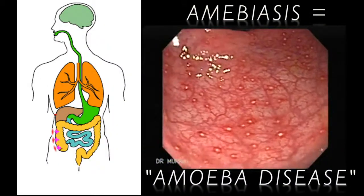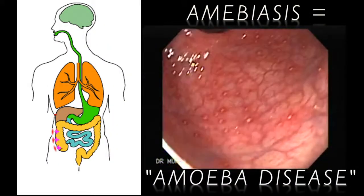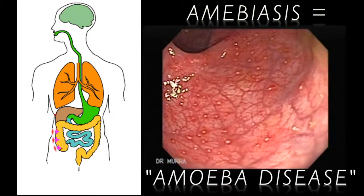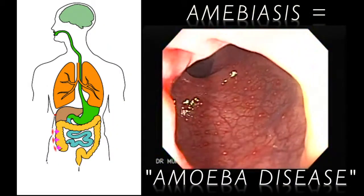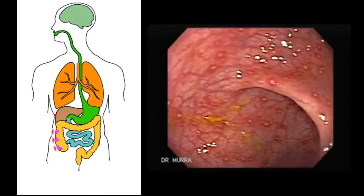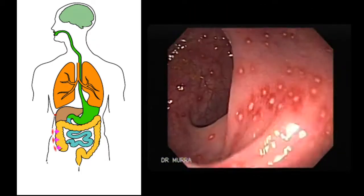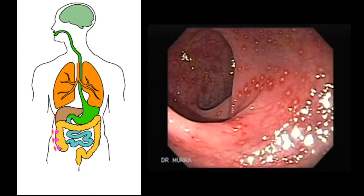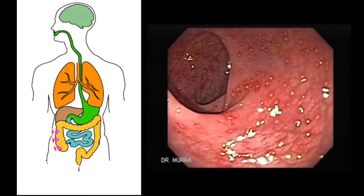Entamoeba histolytica is the cause of amoebiosis, an infection of the intestines. If it invades the colon wall, it can cause ulcers, acute dysentery, or chronic diarrhea.